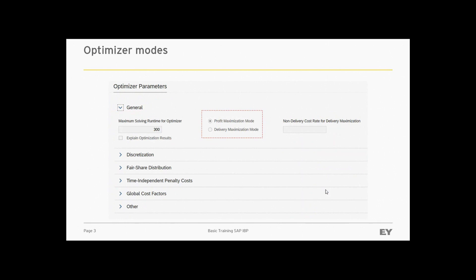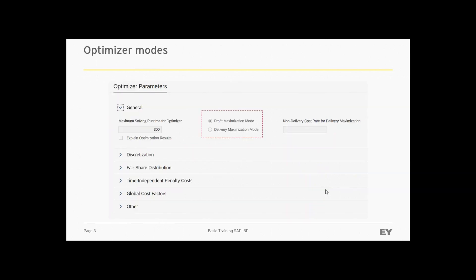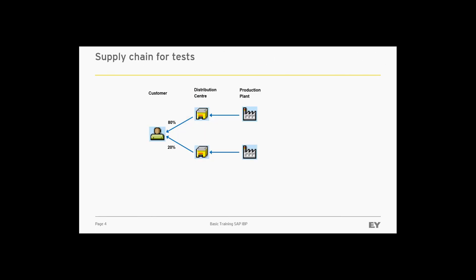The optimizer estimates supply quantities that meet best predefined constraints and cost factors. As you can see on the slides, we have two types of heuristics in IBP: infinite and supply propagation, and two basic optimizer modes: delivery maximization mode and profit maximization mode.